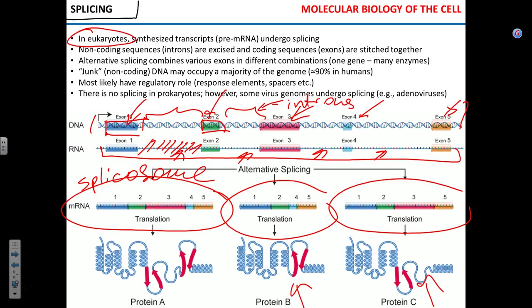Again, only eukaryotes have splicing. Bacteria and archaea do not have splicing — they have slight differences with eukaryotes in gene expression, which we'll cover.